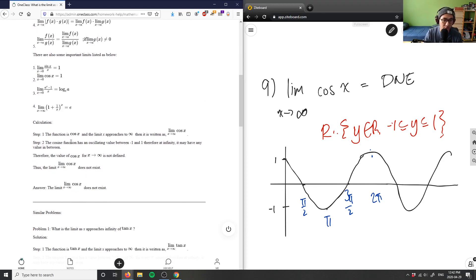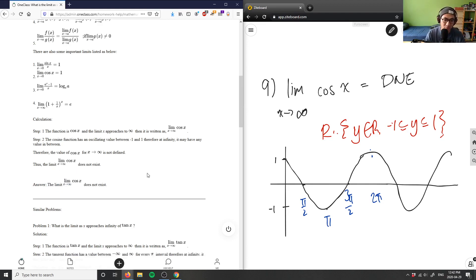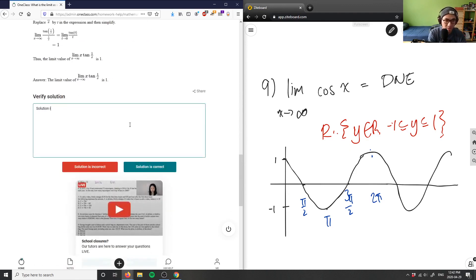So yes, the cosine function has oscillating value from between negative 1 and 1, therefore infinity can have any value in between. So we do not know. It does not converge to a specific value. We know the range of the value. It can be anywhere from 1 to negative 1, but there's no exact same value, exact specific value in which the limit is actually defined. So again, the answer is limit as x approaches infinity of cosine x does not exist. This solution here is correct.